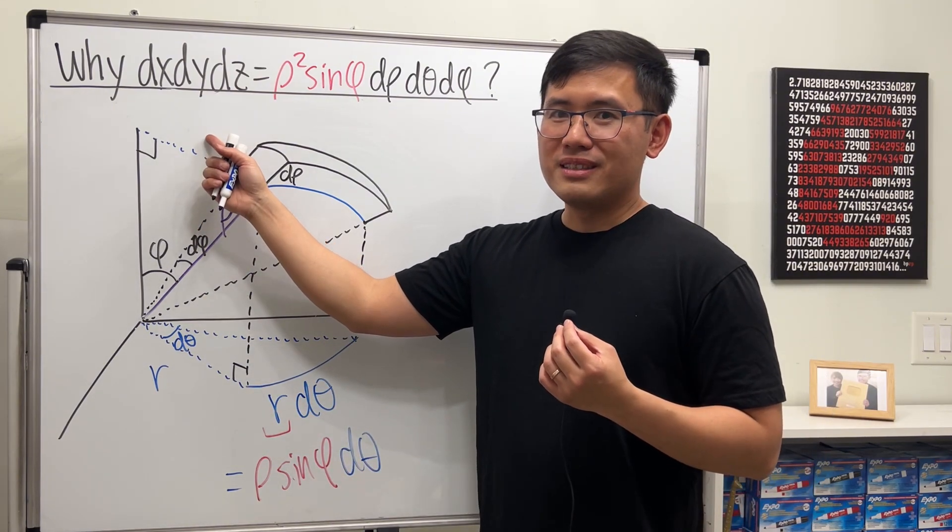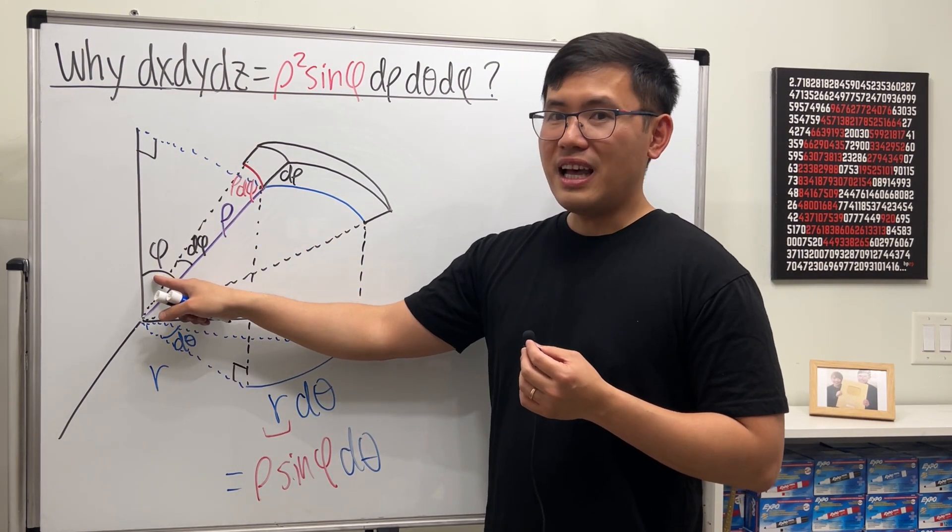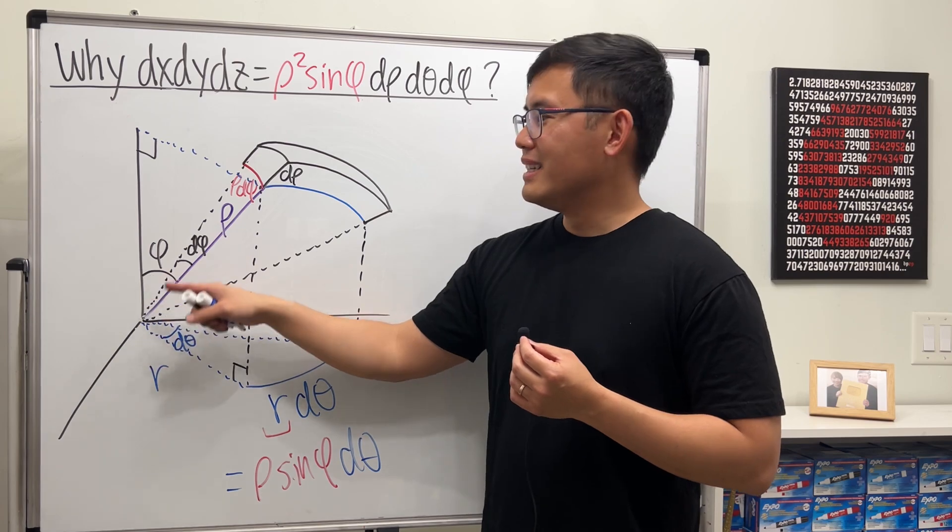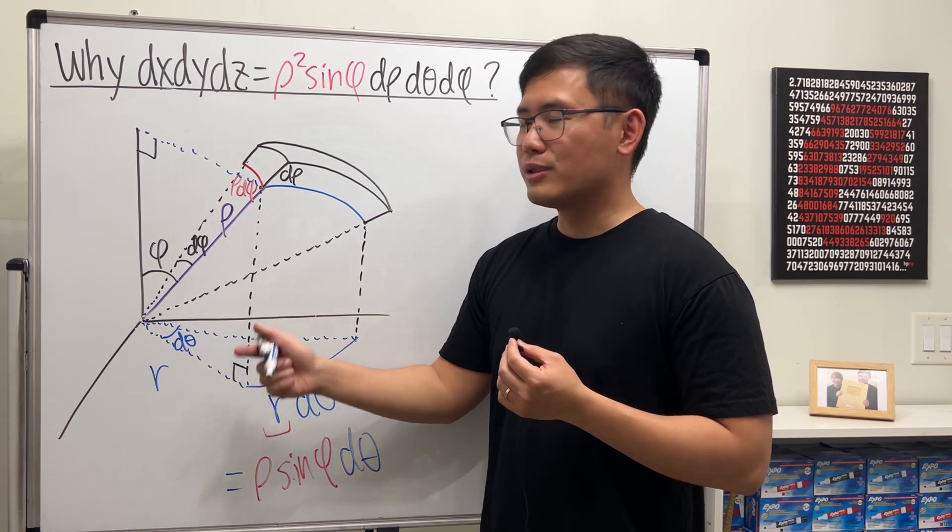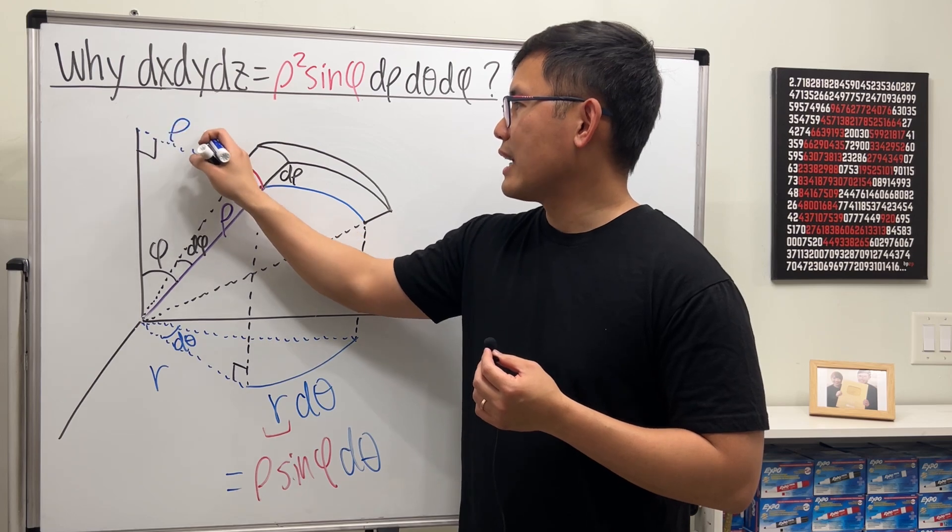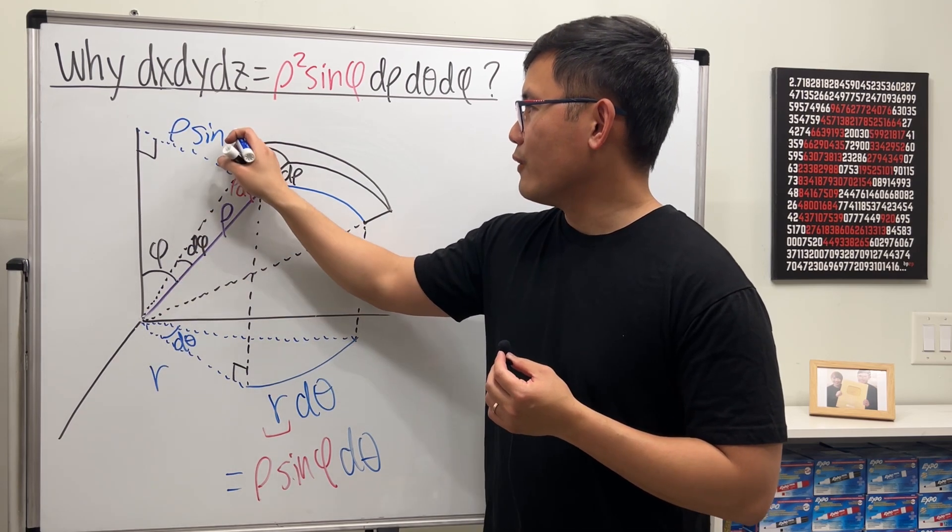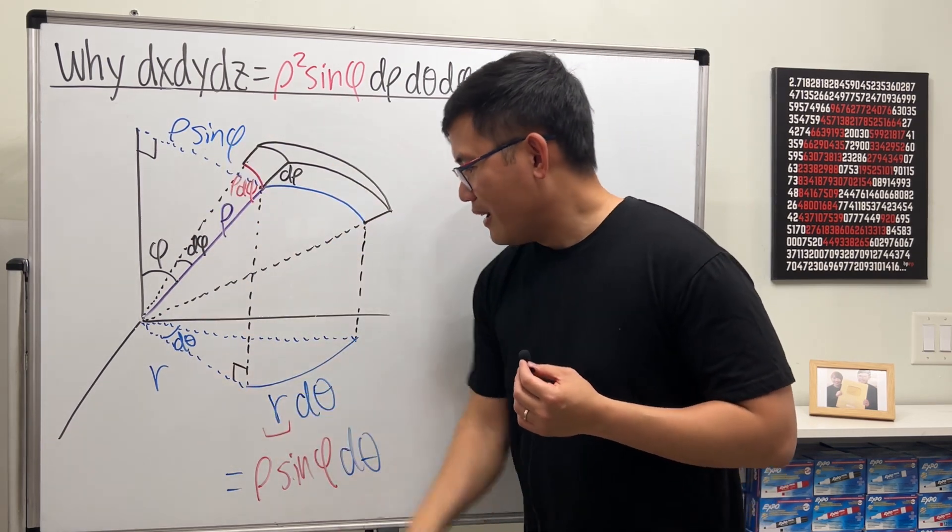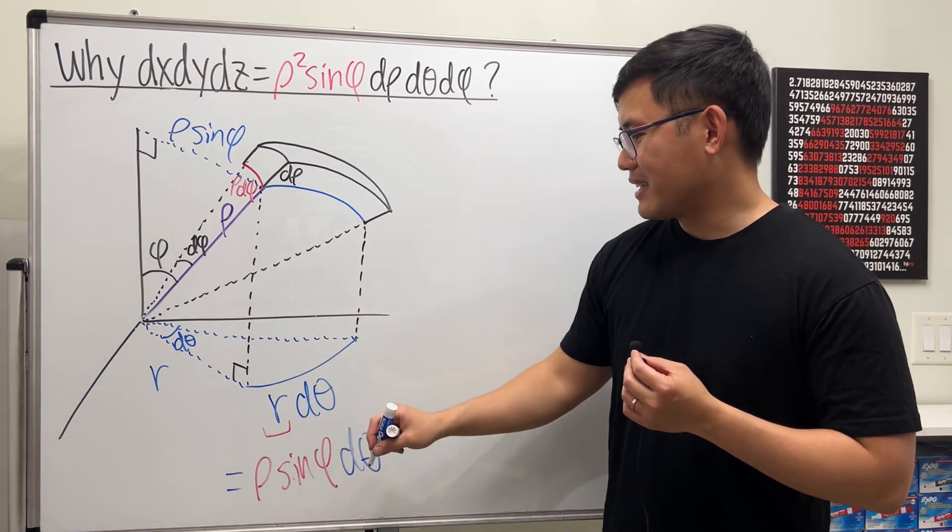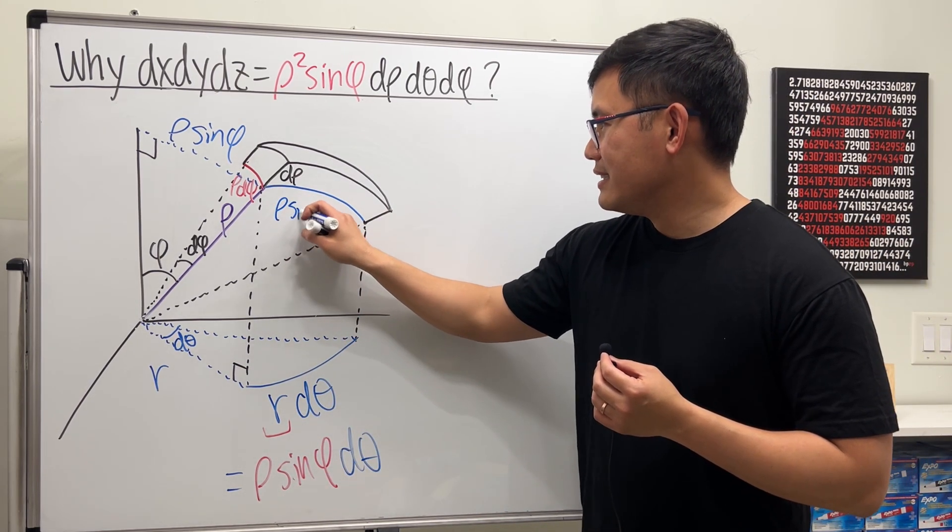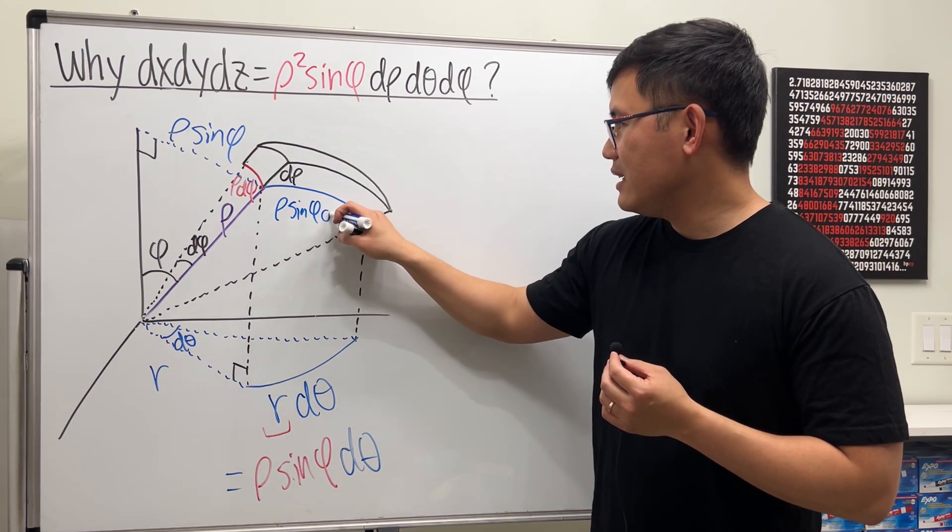This right here is the hypotenuse and this is the opposite. How do we find the opposite? Your sine, right? Sine phi equals opposite over hypotenuse. Multiply the hypotenuse on both sides, so it's just rho times sine of the angle phi. And that is R. That's what I told you earlier, and this is this arc, rho sine phi d theta.